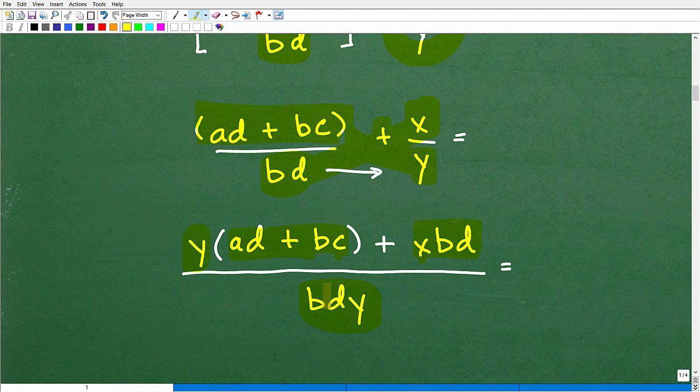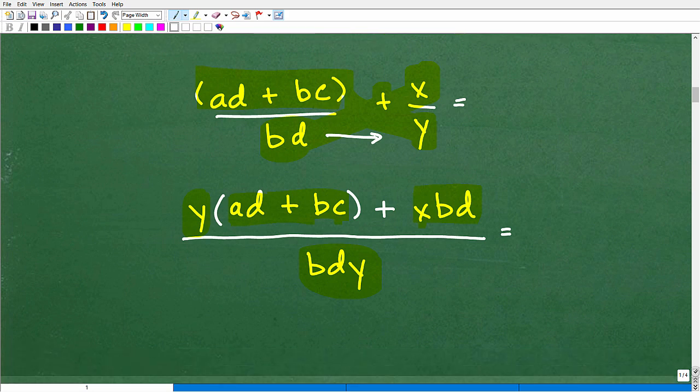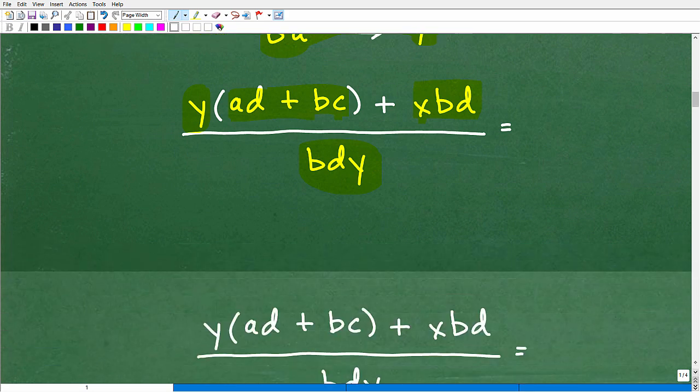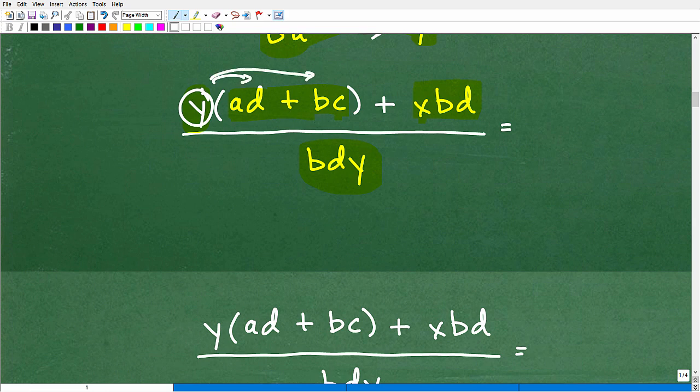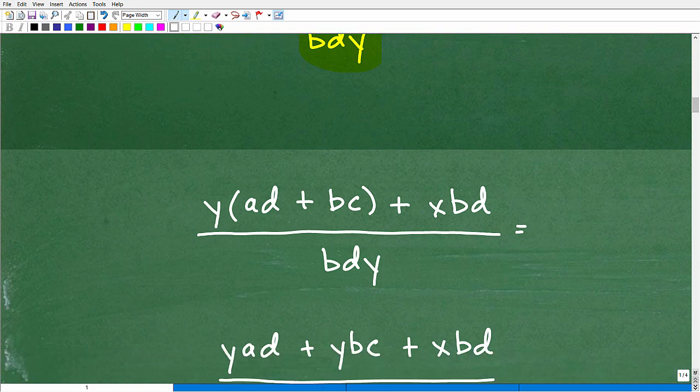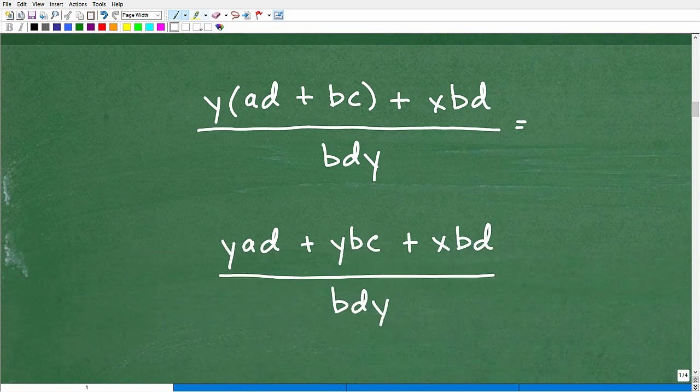Now, at this juncture, you're pretty close to being done. This would be, you know, if you gave me this answer, I would probably give you full credit on a test or quiz, but really I want you to do one additional thing in that we have this y outside of this expression. We can use the distributive property to distribute in that y. So let's go ahead and do that now.